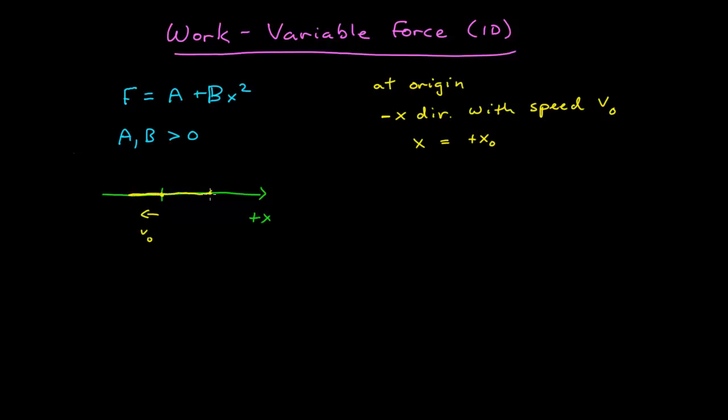turn around, and at some later time, be at some position x naught. Does that make sense? Well, my forces, I'm told, A and B are both positive. So by looking at the equation for my force, I know my force is always positive, so my force is always going to be acting on my particle in the positive x direction.